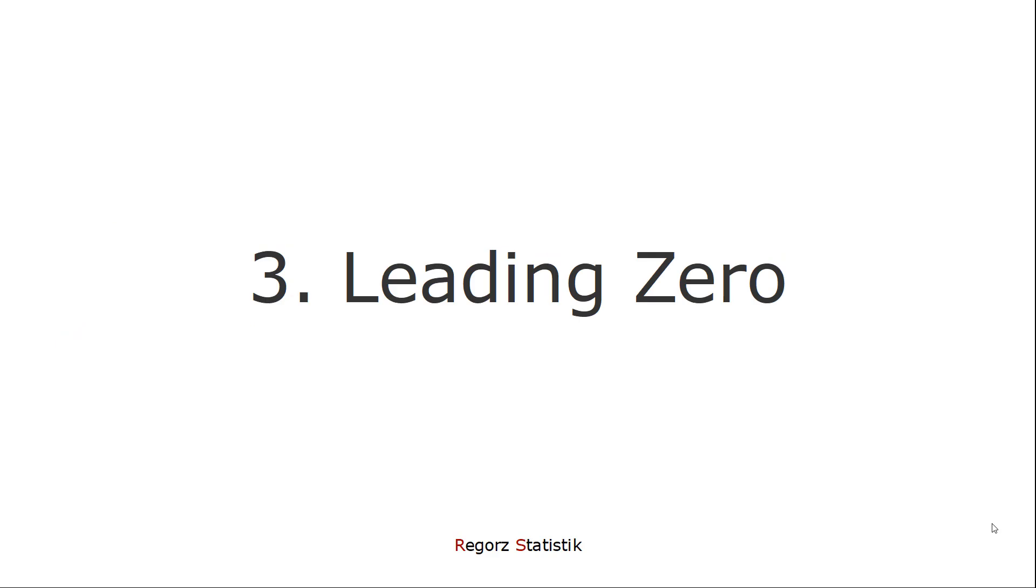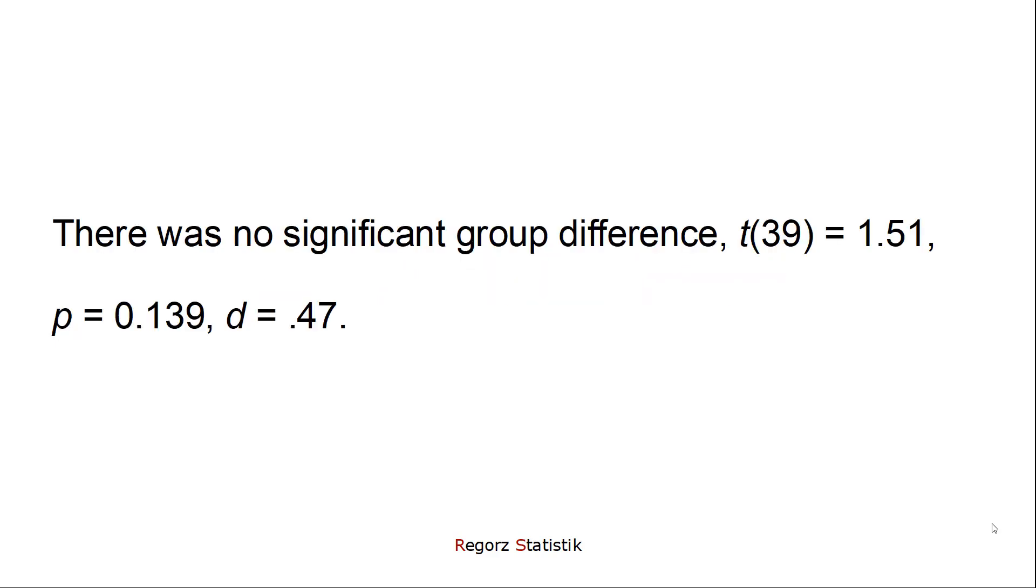Then the leading zero in front of a decimal point. Those two numbers are not correctly reported. The rule is if a value can't in theory get larger than 1 or smaller than minus 1, then there is no zero in front of the decimal point. If, however, in theory not necessarily in your results, a value can get larger than 1 or smaller than minus 1, there is a zero in front of the decimal point. So here are the correct versions.